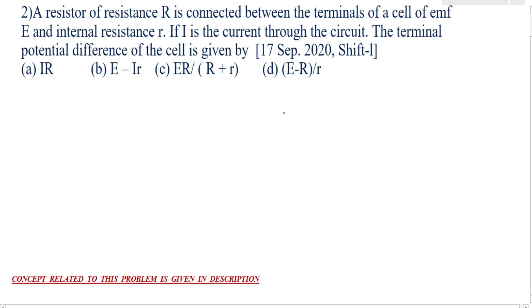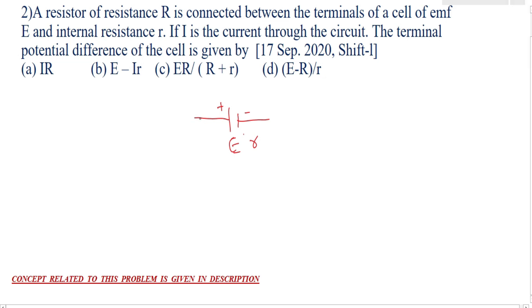What is given? We take a cell — this is the symbol for a cell; this is positive, this is negative. The EMF of this cell is capital E and its internal resistance is small r. When we connect this cell in a circuit which consists of a resistor capital R, current will flow. Let I be the current flowing through the circuit.